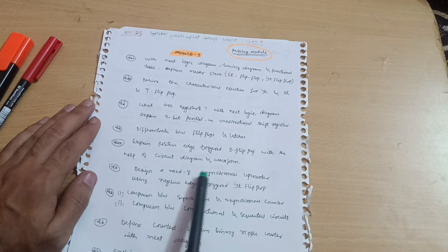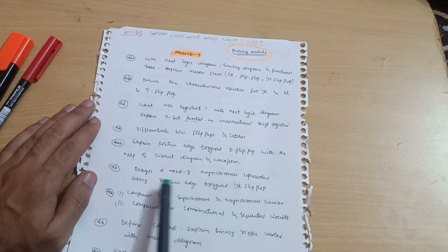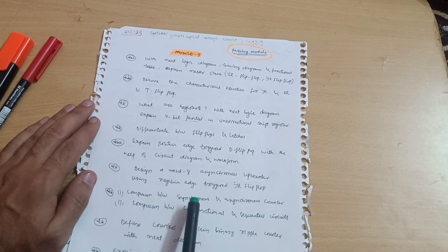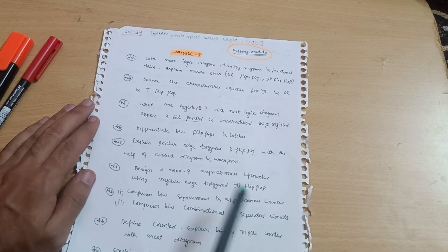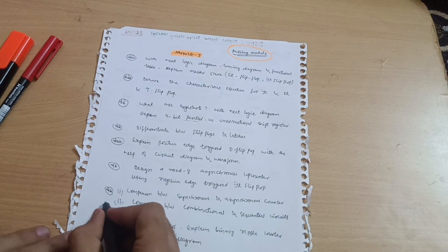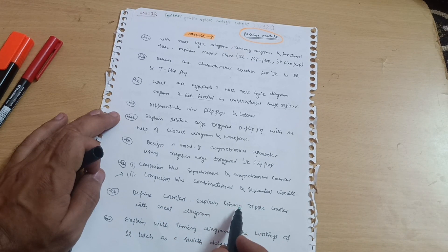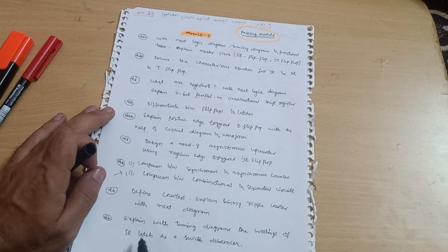Design a mod-8 asynchronous up counter using negative edge triggered JK flip-flop. Comparison between synchronous and asynchronous counter and comparison between combinational and sequential circuits. It is the most important question, a super important one.